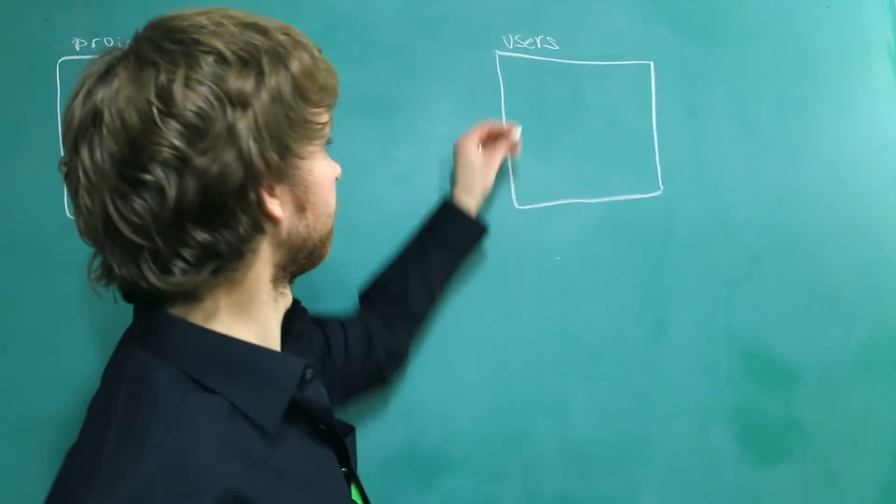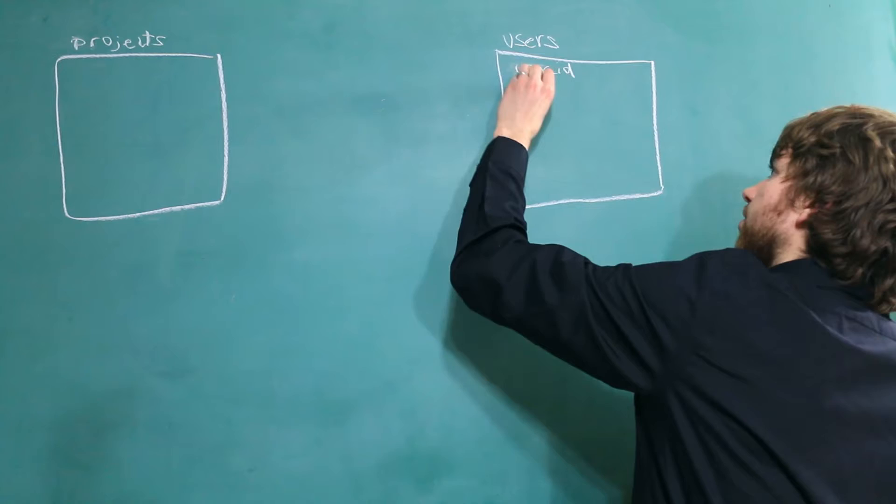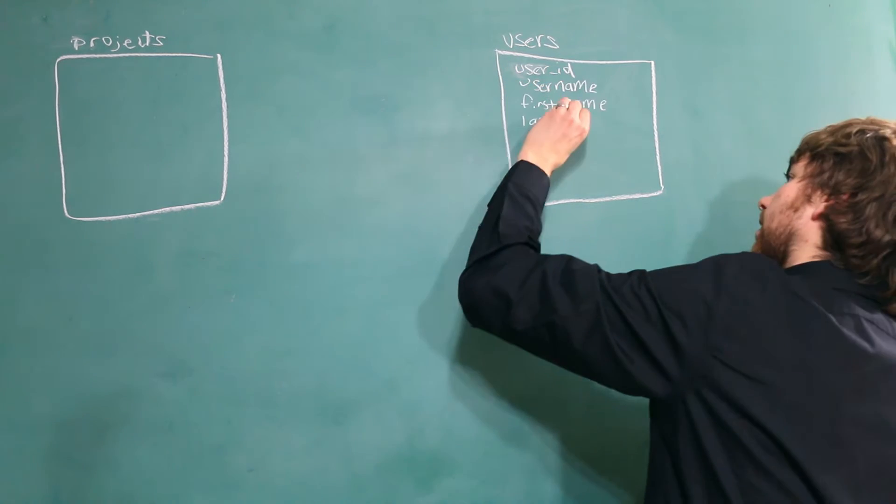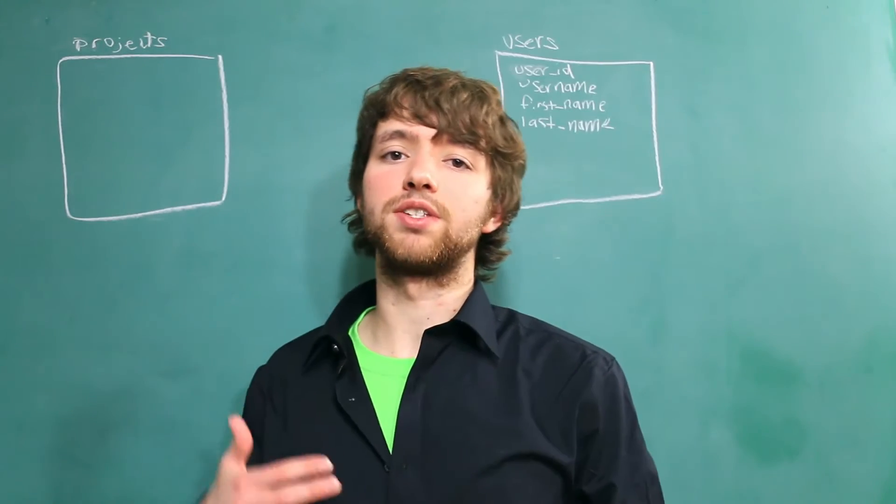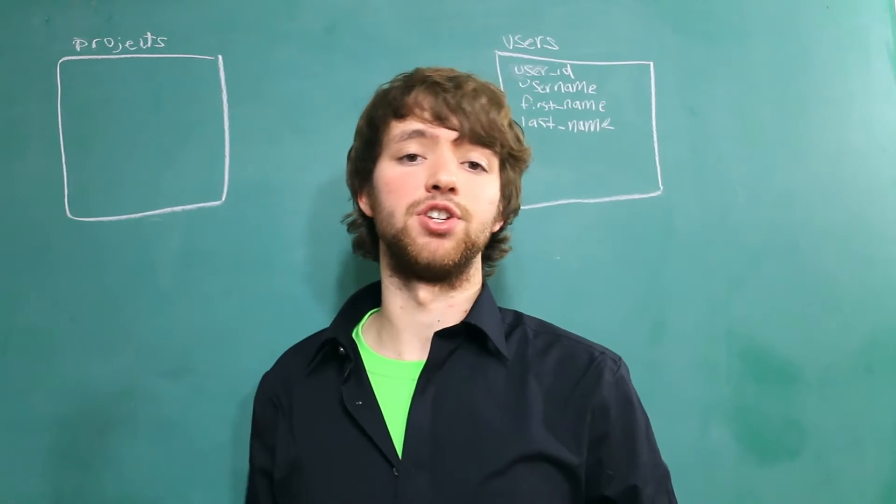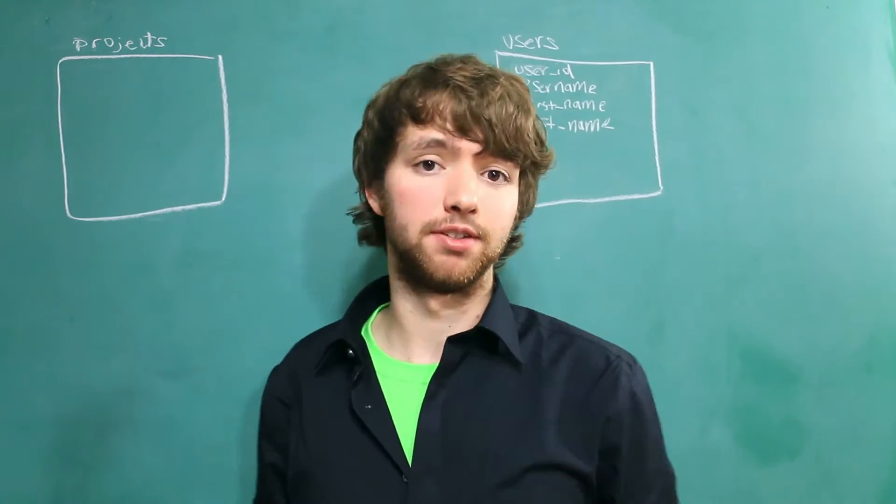So in the user table, we'll have a user ID, a user name, first name, and last name. I'm not going to worry about data types for now. All you need to know is that if you have a foreign key, it needs to match the data type of the column it references.